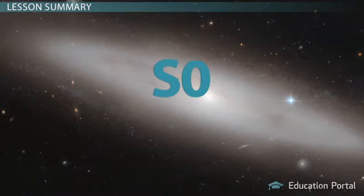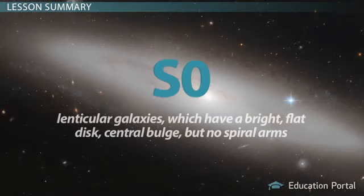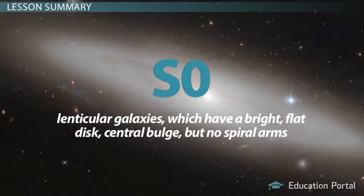And finally, S0 galaxies, or lenticular galaxies, which have a bright, flat disk and central bulge but no spiral arms.